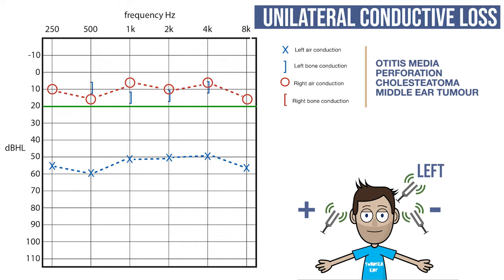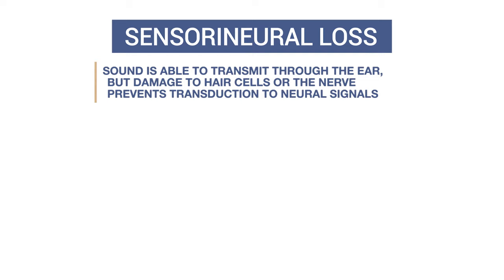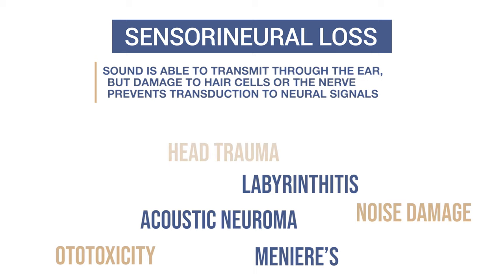Sensorineural hearing loss is the name given when the pathology is beyond the middle ear. Sound is able to be transmitted through to the inner ear but due to disease it cannot be transduced into neural activity by the cochlea and transmitted by the nerve. There are many different reasons for this such as acoustic neuroma, Meniere's disease, ototoxicity, labyrinthitis, noise damage, head trauma and presbyacusis.